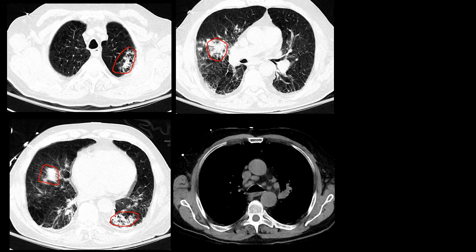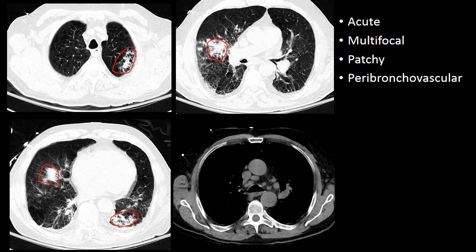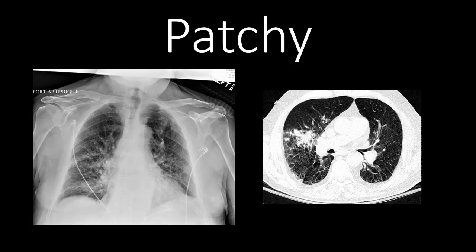Using the D-ALPO framework, this was an acute process. It's multifocal or patchy, in a peribronchovascular distribution, meaning it's up against the airways and the vessels. There is a little bit of adenopathy seen on the mediastinal study. This ends up being a case of bacterial pneumonia.